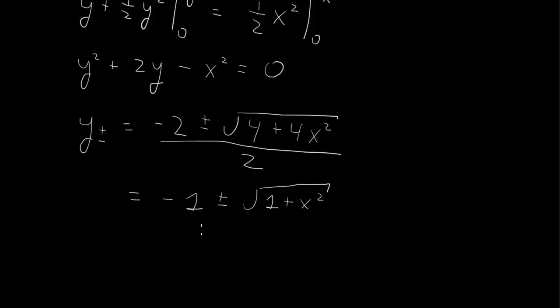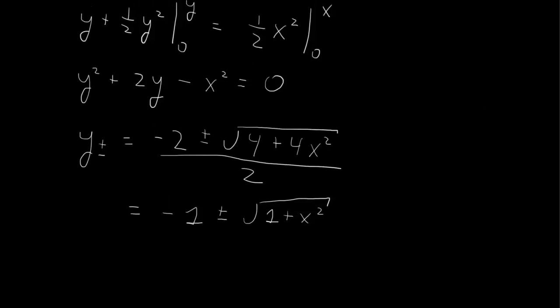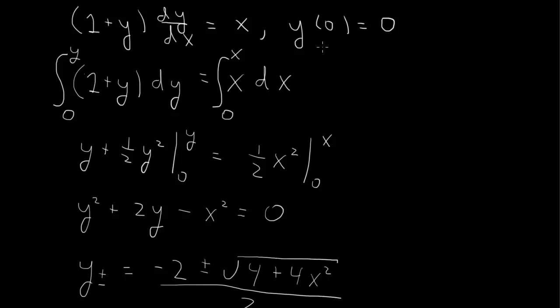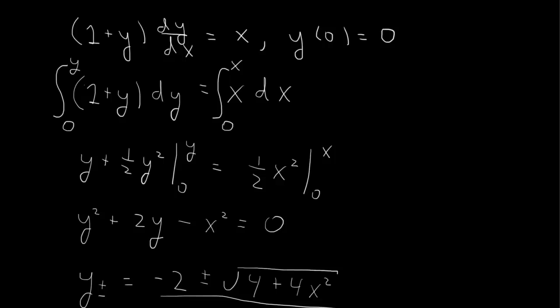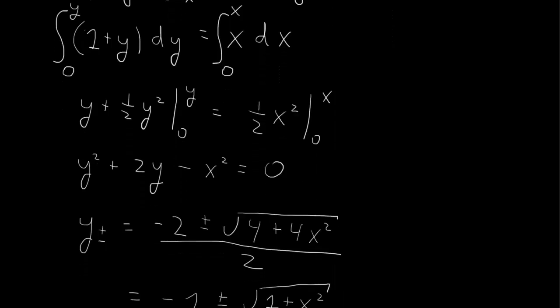Those are the two roots of the quadratic equation. However, we don't have two solutions—we should only have one. The solution of the differential equation with the initial condition should be unique. Both roots cannot satisfy this single initial condition y(0) = 0, so we need to check which one does.